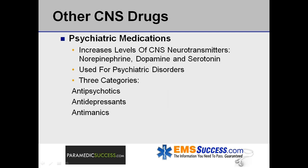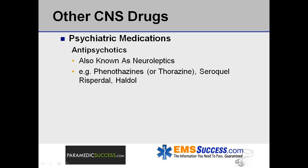Psychiatric medications work by increasing the amounts of the CNS neurotransmitters norepinephrine, dopamine, and serotonin in patients with psychiatric disorders. Such drugs are broken down into antipsychotics, antidepressants, and antimanics. Antipsychotics are also known as neuroleptics because they affect the nerves. Examples include phenothiazines or Thorazine, Seroquel, Risperdal, and Haldol.